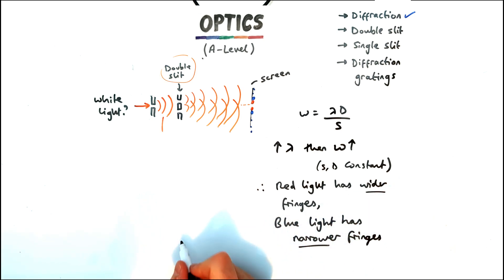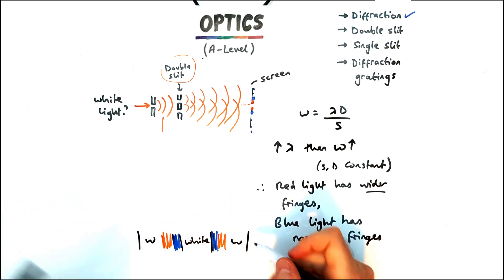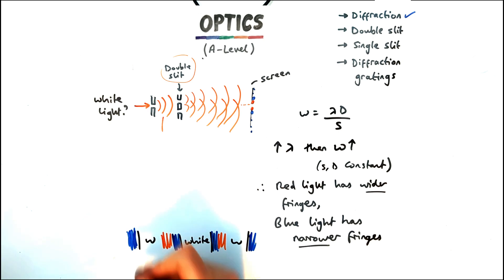So if we were to view this on a screen we'd have white light surrounded by blue because it hasn't diffracted that much surrounded by red and then you'd have white and then you'd have blue and red again and so on. Obviously you'd have green and the other colours of the rainbow in between but that principle will work with all of those colours.